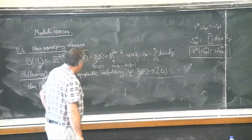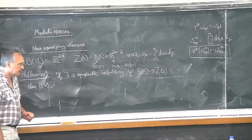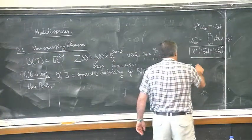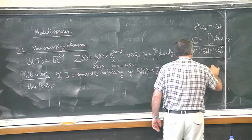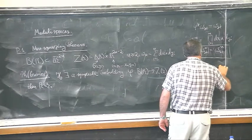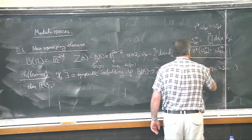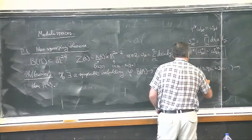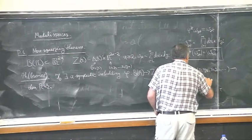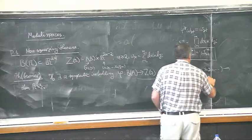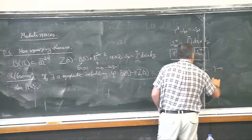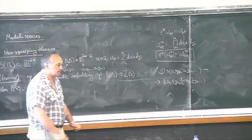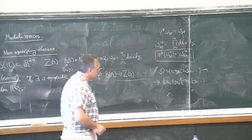But you can easily construct a volume-preserving embedding of a ball of any radius to a cylinder of any radius. For example, you can take a map which sends (x₁, y₁, x₂, y₂, ...) to (x₁, ε·y₁, (1/ε)·x₂, (1/ε)·y₂, ...) leaving the rest unchanged. This is a volume-preserving map which squeezes the large ball to a narrow cylinder. But you cannot do this symplectically — this is the meaning of this theorem.